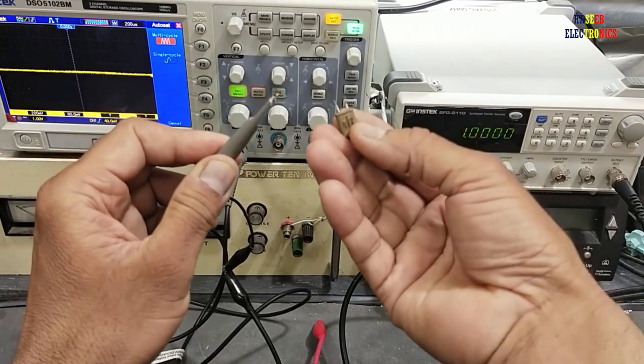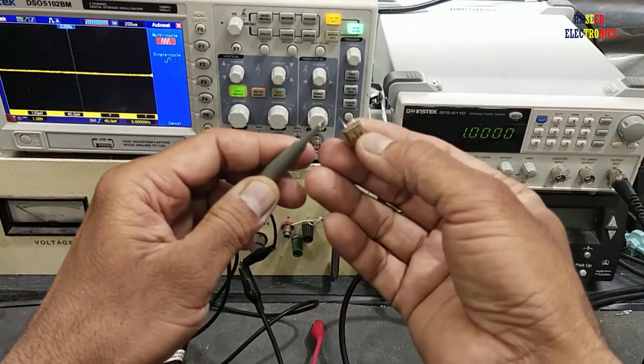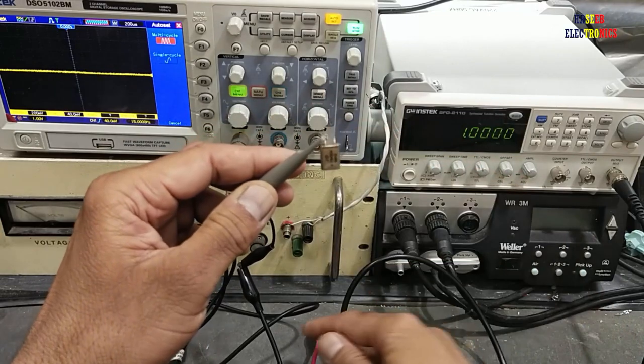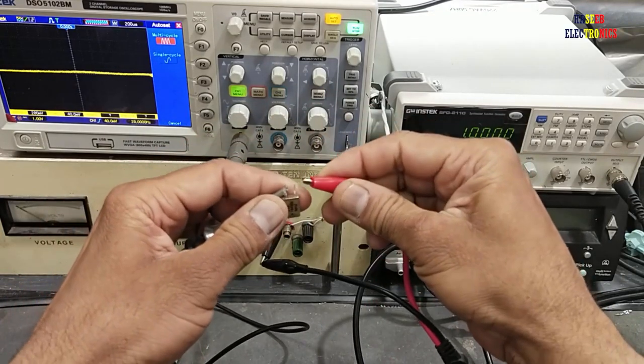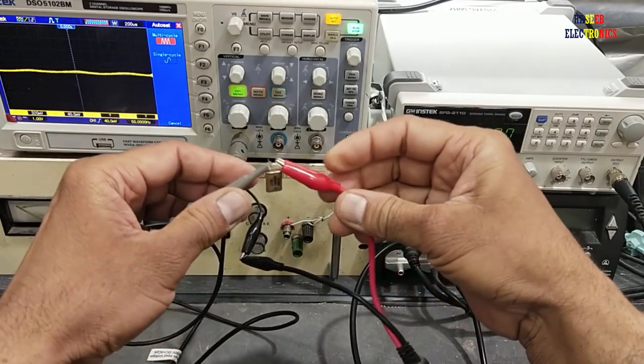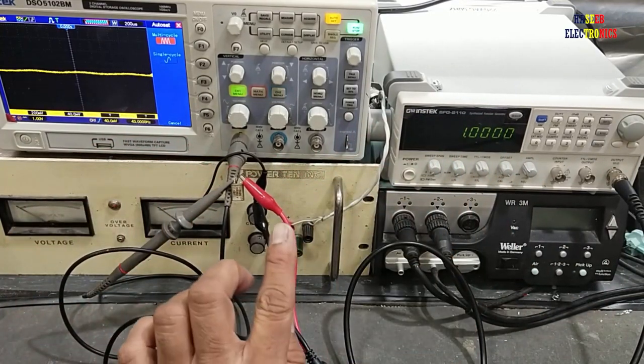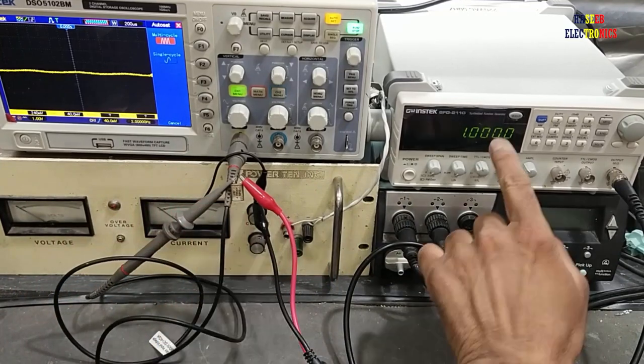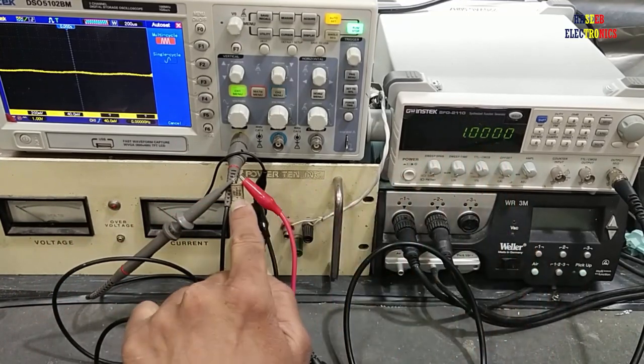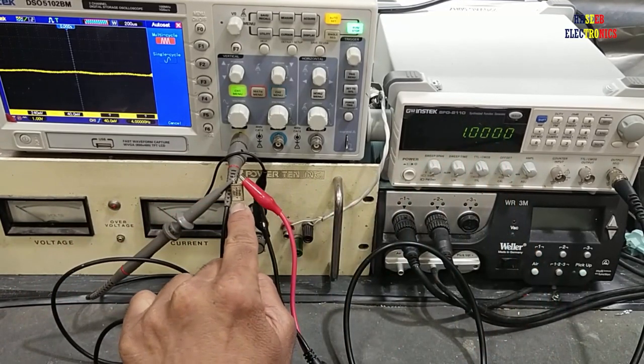We will connect one end of this crystal oscillator to the oscilloscope. The second side we will connect to the function generator. You can use any function generator or signal generator. The signal generator range must be above the crystal oscillator frequency.